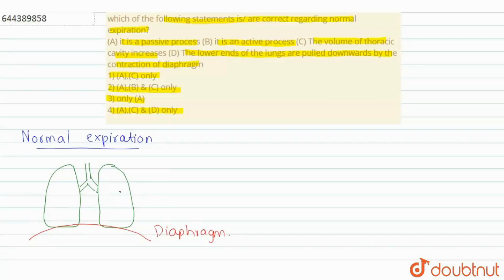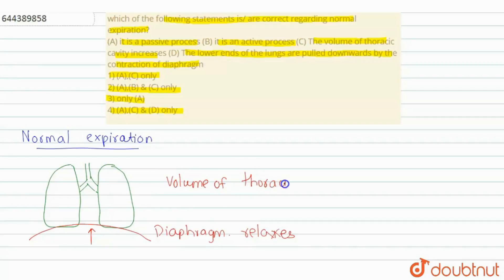During normal expiration, the diaphragm relaxes. As the diaphragm relaxes, it gets pushed upwards. As it gets pushed upwards, it compresses the lungs, and the volume of the thoracic cavity decreases. So the volume of the thoracic cavity decreases as the diaphragm is pushed upward due to its relaxation.